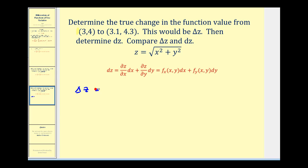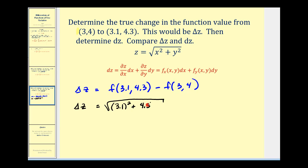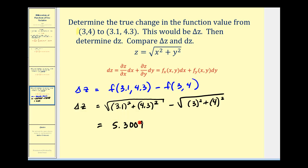The true change in z is going to be equal to f of three point one comma four point three, minus f of three comma four. We take x equals three point one and y equals four point three and substitute into our function, as well as x equals three and y equals four. To save some time, I've already done these calculations. This comes out to approximately five point three zero zero nine, and this ends up being the square root of twenty-five, which is equal to five. So the true change in the function value is point three zero zero nine.